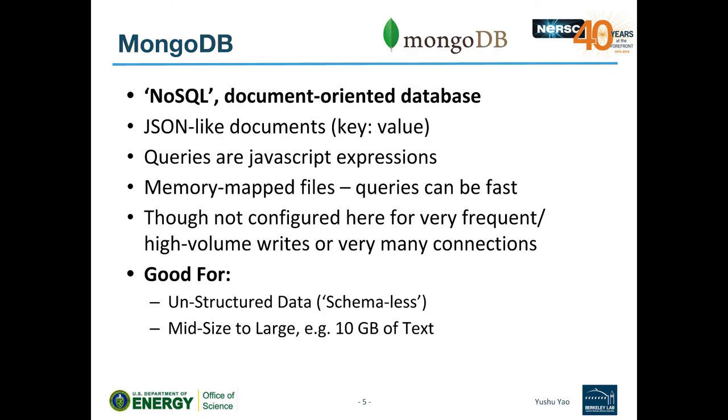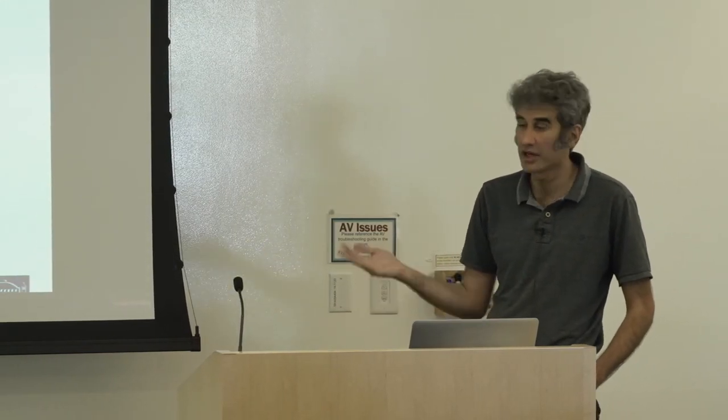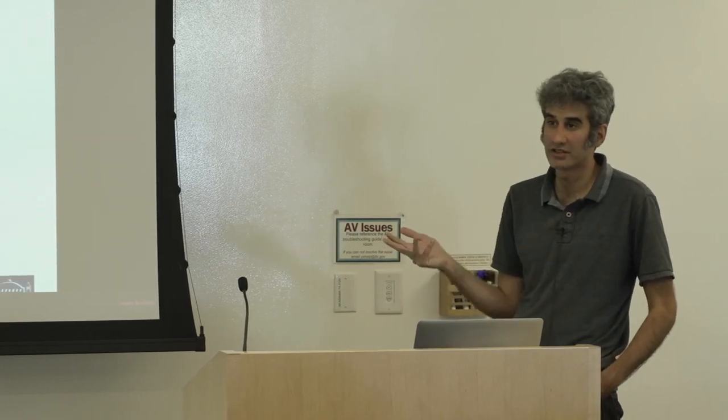MongoDB is useful when you don't know the structure of your data in advance. It has a nice key-value structure if you like JSON, and you can query with JavaScript expressions. Queries can be very fast, which is why people like Mongo. This is somewhat mitigated in our case because it's a shared service - your data may not be in cache because other users' data may be there.